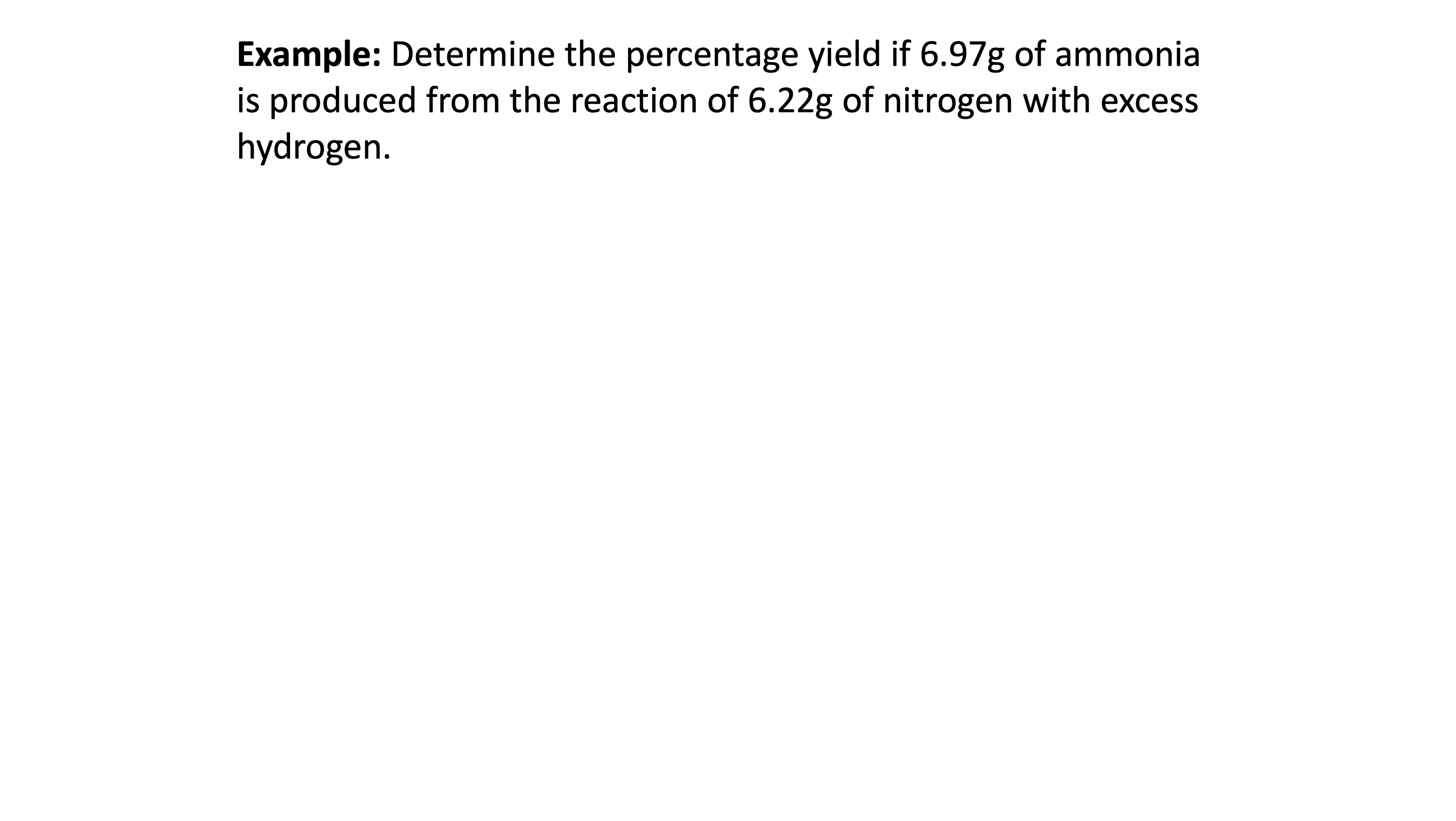So just to look at a problem, percent yield, if 6.97 grams of ammonia is produced in the reaction of 6.22 grams of nitrogen. All right, so just learning how to read a problem, this is produced, so this is my actual yield. So what I need to do here is figure out the theoretical yield. So hit pause and try to come up with the theoretical yield of ammonia from this much nitrogen. So first write the equation.